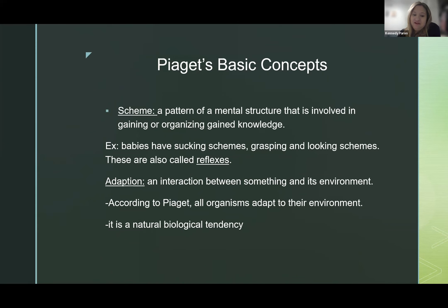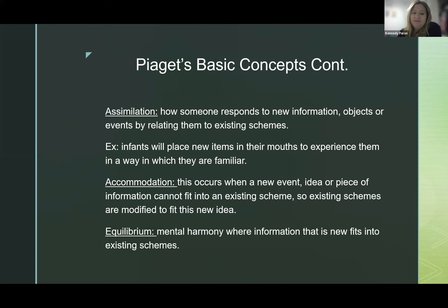Next is adaptation — the interaction between an organism and its environment. We have many interactions with our environment each day as humans, such as looking around when we hear a noise or talking to a friend. According to Piaget, all organisms adapt to their environment; it is a natural biological tendency of humans. Next is assimilation — how someone responds to new information, objects, or events and relates them to existing schemas. For example, infants in a new place with new items will put them in their mouths to experience them in a way familiar to them, using that rooting reflex of putting things in their mouths.